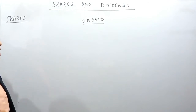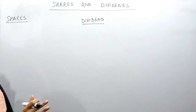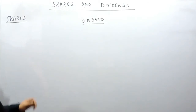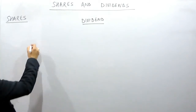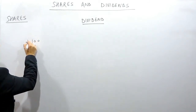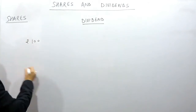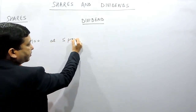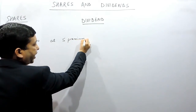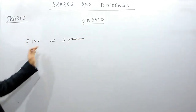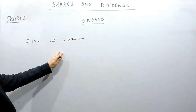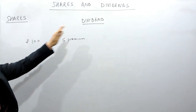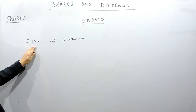Whatever the premium or discount, it has no part in the dividend calculation. Suppose we purchase a share of Rs.100 at a premium of 5. It means the total investment we have to make in the company is Rs.105, but the dividend we will get on Rs.100 only.